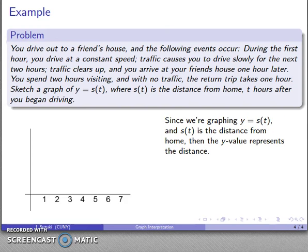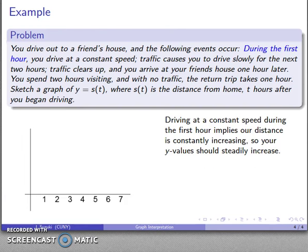We're graphing s(t) and s(t) is the distance from home. Our vertical values, our y values, represent a distance. So our y values are going to change as our distance changes. During the first hour, I drive at a constant speed. That means our distance is constantly and steadily increasing. So we'll draw a nice, steady increase of distance, of our y values, during that first hour.